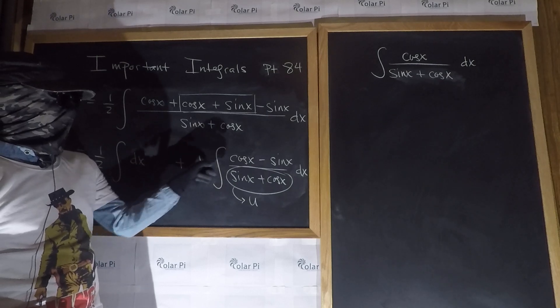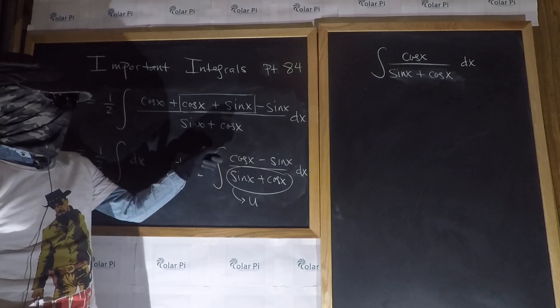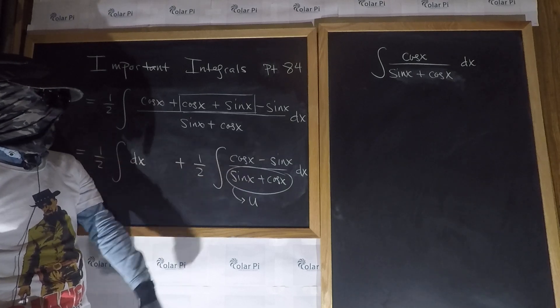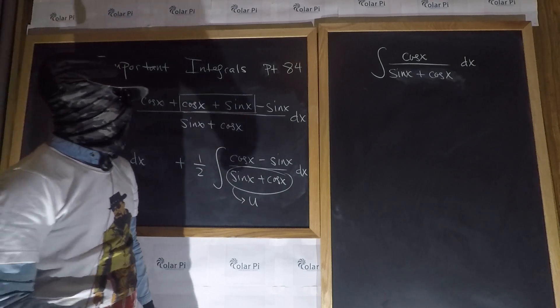So, what I'm saying is, this is exactly a half integral of du over u, with the substitution of the u being sin x plus cos x. So, then, what we have now is,